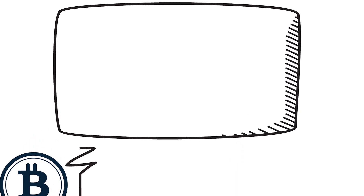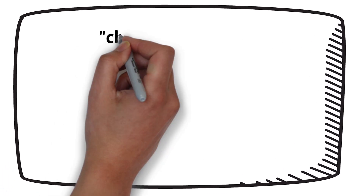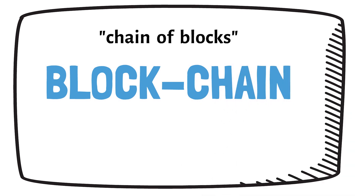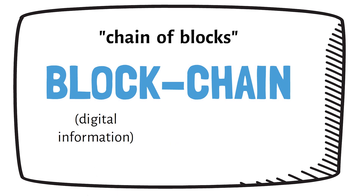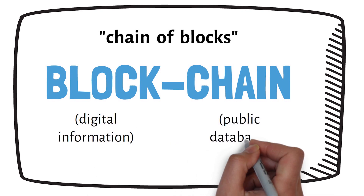At its most basic level, blockchain is literally just a chain of blocks, but not in the traditional sense of those words. When we say block and chain in this context, we are actually talking about digital information — that is the block — which is stored in a public database — that is called the chain.